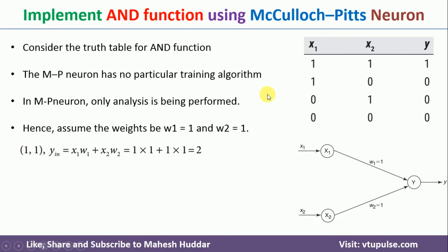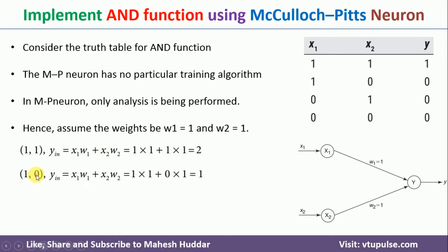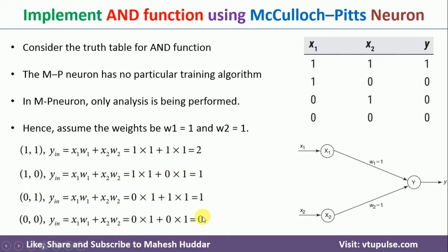For the first input (x1=1, x2=1): yin = x1·w1 + x2·w2 = 1×1 + 1×1 = 2. For the second input (x1=1, x2=0): yin = 1×1 + 1×0 = 1. For the third input (x1=0, x2=1): yin = 0×1 + 1×1 = 1. For the last case (x1=0, x2=0): yin = 0. So the net inputs at node y are 2, 1, 1, and 0 respectively.